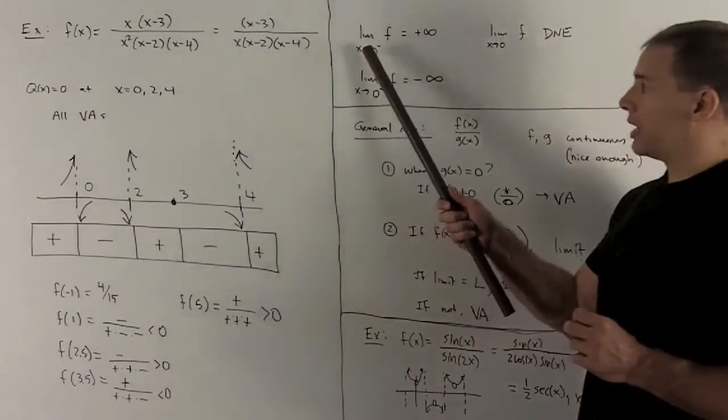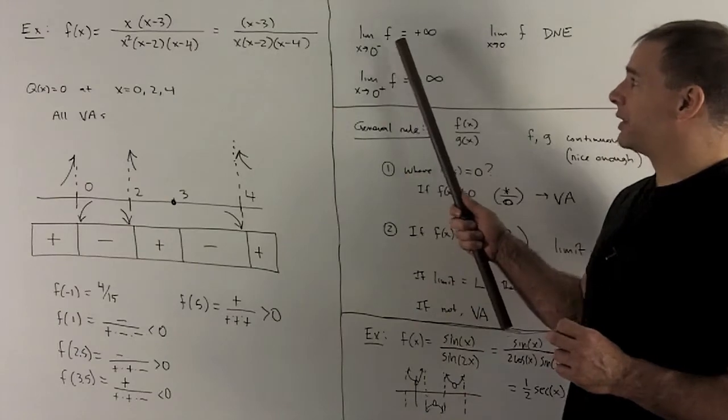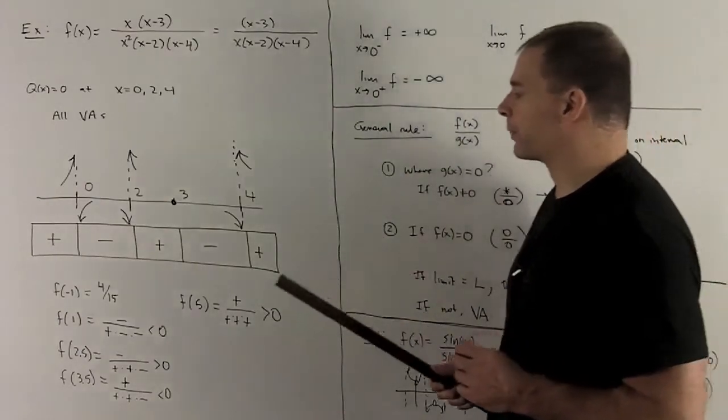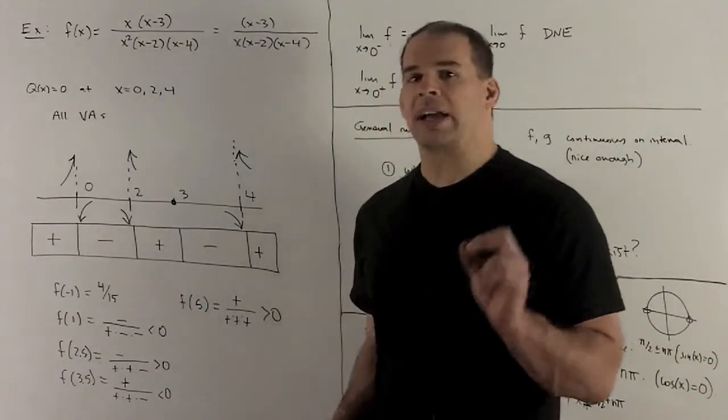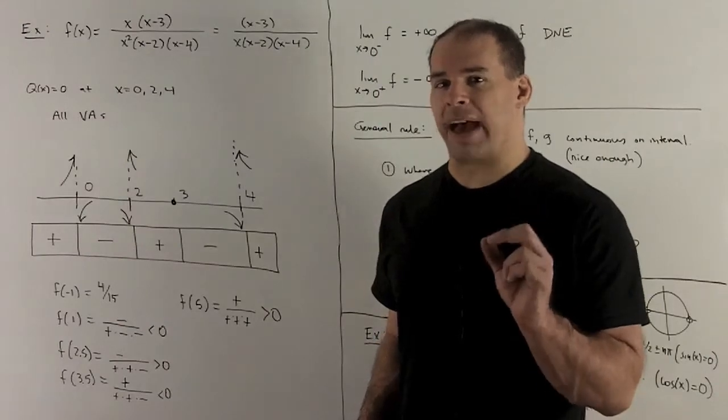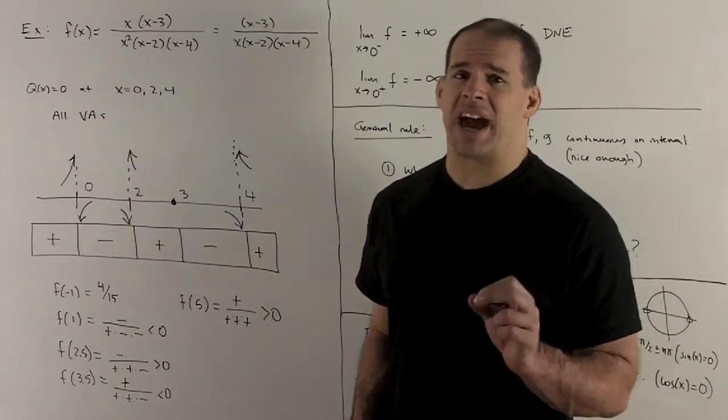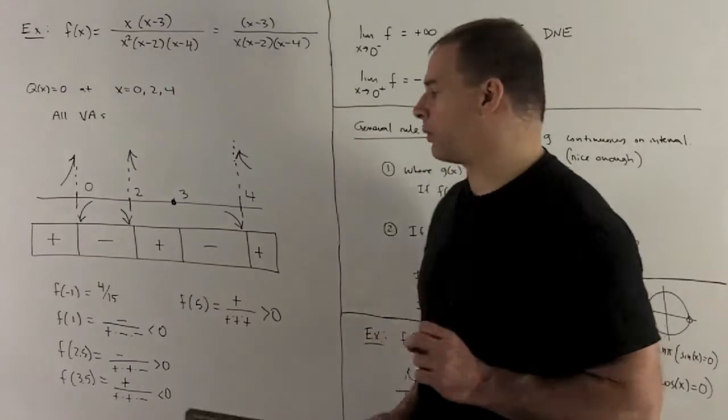So, limit as x goes to 0 from the left, it's going to be plus infinity. For the rest of them, we don't actually have to get the actual value out. We just need to know the sign. Once I know the sign, that tells me everything that's happening in my region.